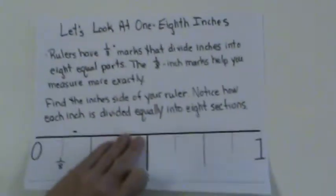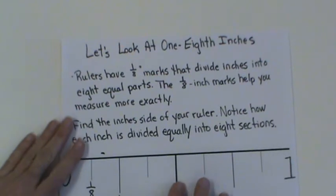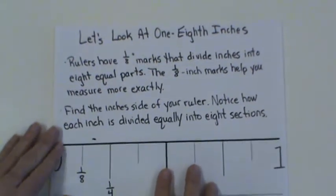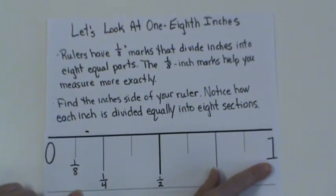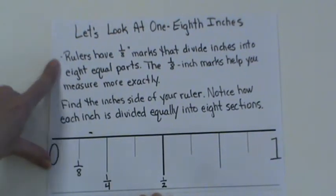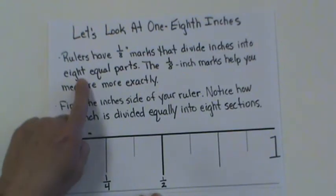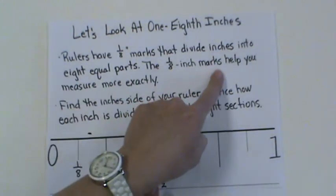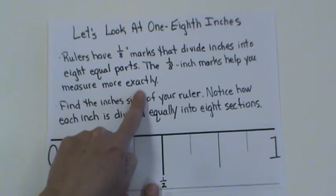Now let's look at the next mark on the ruler: the one-eighth inch. I've got my giant ruler again, divided up even more. Rulers have one-eighth inch marks that divide the inches into eight equal parts. The one-eighth inch mark helps you measure more exactly.